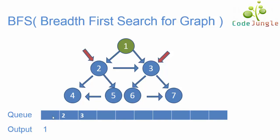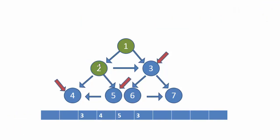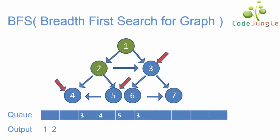Now the next element in the queue is 2. We will see what all are the neighbor elements for 2. The neighbor elements for 2 are 3, 4, and 5, so 4, 5, and 3 are inserted into the queue. Also, 2 has been marked as green because 2 has been moved to the output.